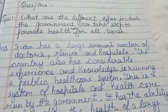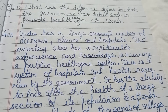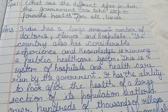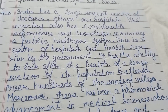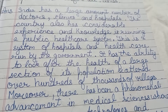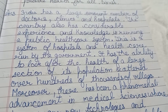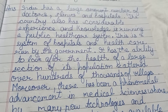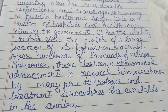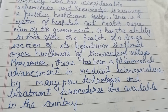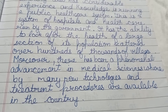What are the different ways in which the government can take steps to provide health care for all? The answer is: India has a large number of doctors, clinics, and hospitals. The country also has considerable experience and knowledge of running a public health care system — a system of hospitals and health care run by the government. It has the ability to look after the health of a large section of its population scattered over hundreds and thousands of villages.